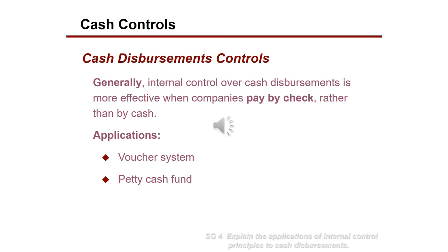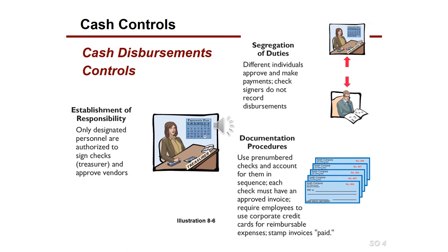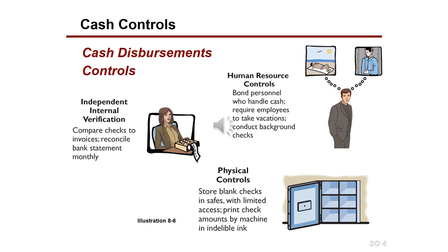Now to cash disbursement controls — when the company is paying out money, internal controls over cash disbursements are more effective when companies pay by check instead of cash. These include implementing a voucher system or having a petty cash fund. Cash disbursement controls also involve segregation of duties, establishment of responsibilities, documentation procedures, human resource controls, independent internal verification, and physical controls.